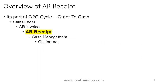AR Receipt comes in the part of the O2C cycle. Generally, if you observe the O2C process, it starts with sales order, then the invoice, then the receipt, then cash management, and then the GL entry. We can also create an AR Receipt independent of a sales order or invoice and just post the AR Receipt to the GL journal.